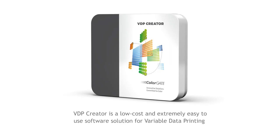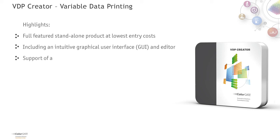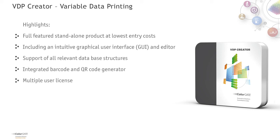VDP Creator is a low-cost, extremely easy-to-use software solution for variable data printing, ideal for print service providers in large and wide-format printing. It is characterized by an intuitive graphical user interface, an editor, support of all common graphic input formats, and an integrated barcode and QR code generator. A multiple user support allows different users to work with one software license. VDP Creator works perfectly in combination with ColorGate Production Server.